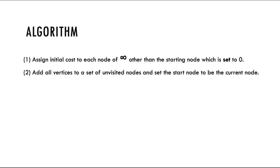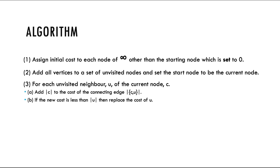Step 2, add all the vertices to a set of unvisited nodes and set the start node to be the current node. Step 3, for each unvisited neighbor, which we will call u, of the current node, which we will call c, add the current node to the cost of the connecting edge.